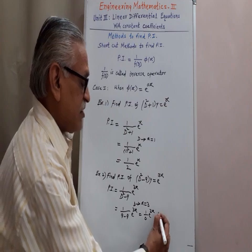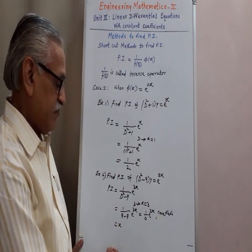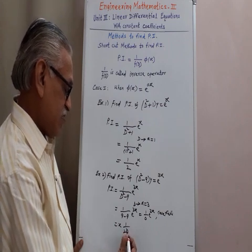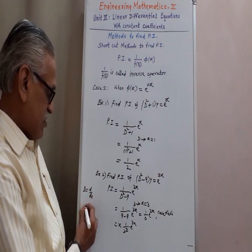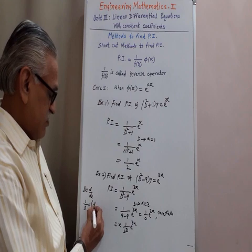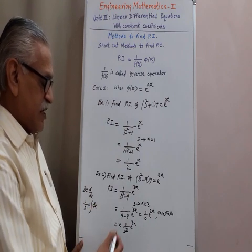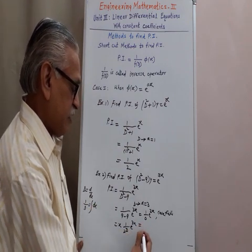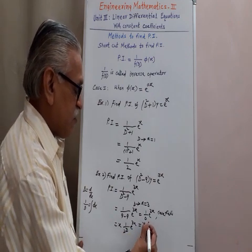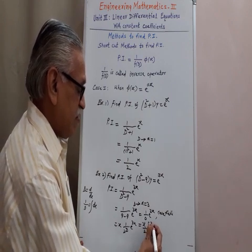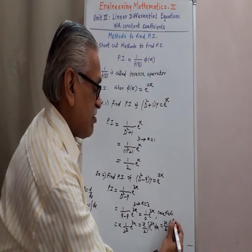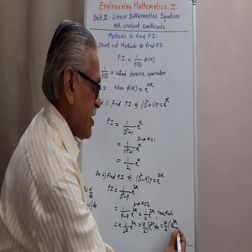Case: 1 upon 3, and then 1 by D stands for integration with respect to x, and therefore it becomes x by 2. 1 by D means integration of e raise to 3x with respect to x, and e raise to 3x by 3.